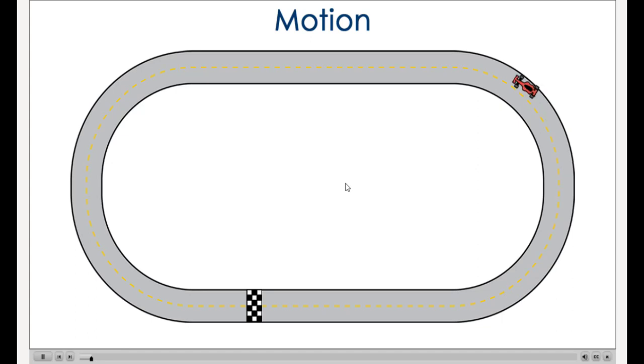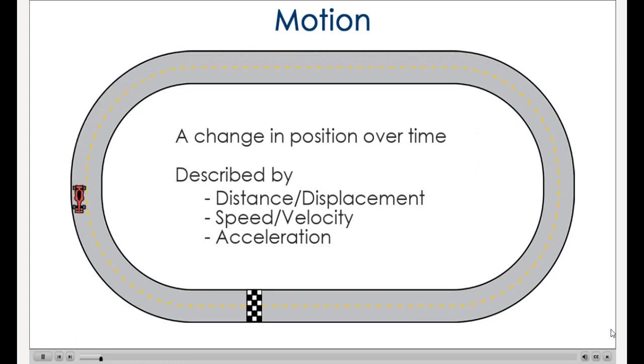This race car is moving around the track. At any point we can describe its motion, how far it has moved, how fast is it going, and how quickly it is slowing down or speeding up. Motion is a change in position over time. We describe motion using terms such as distance and displacement, speed and velocity, and acceleration.